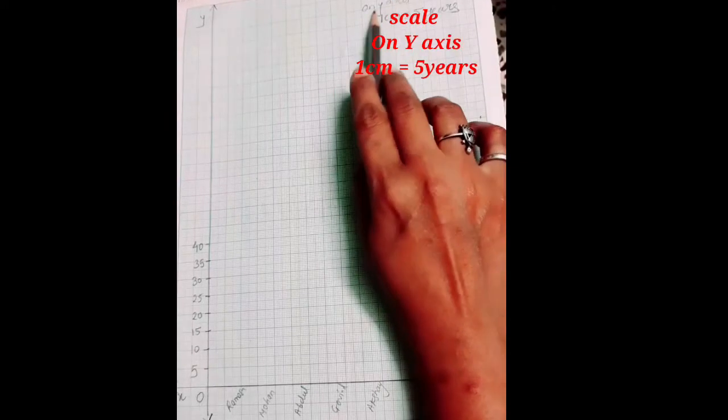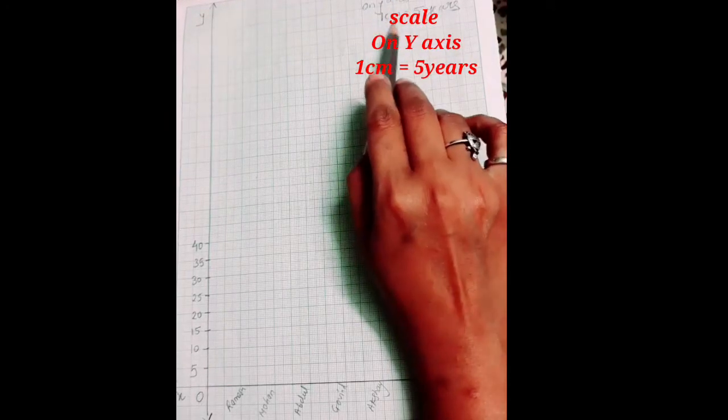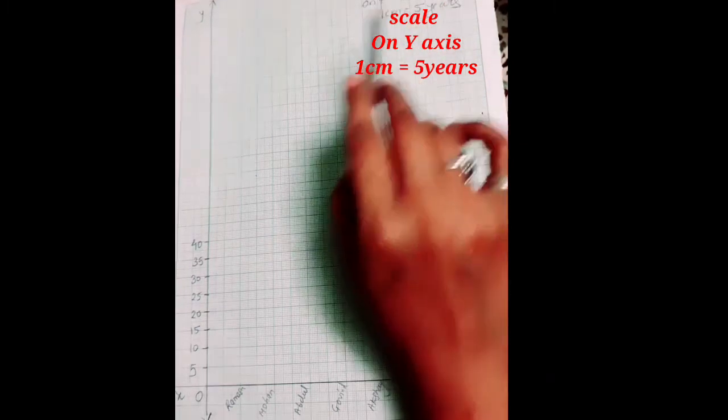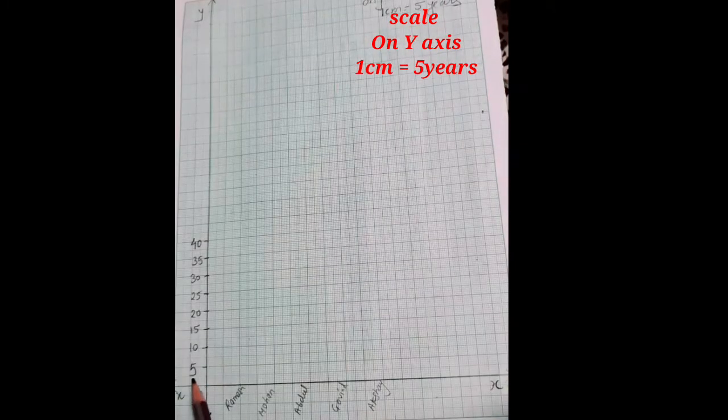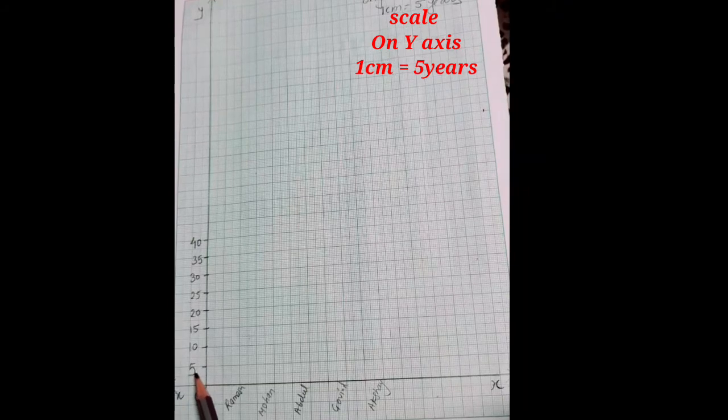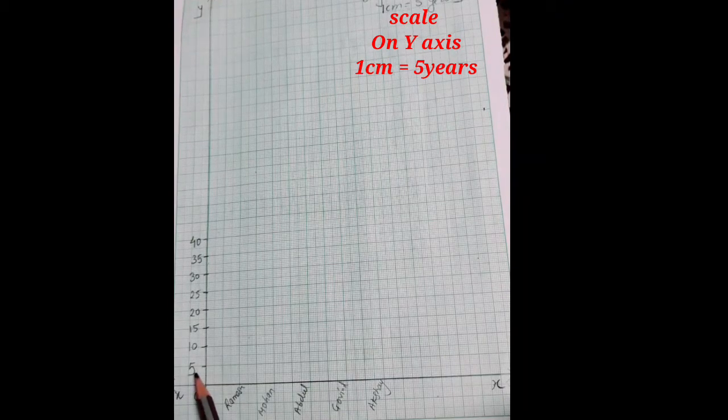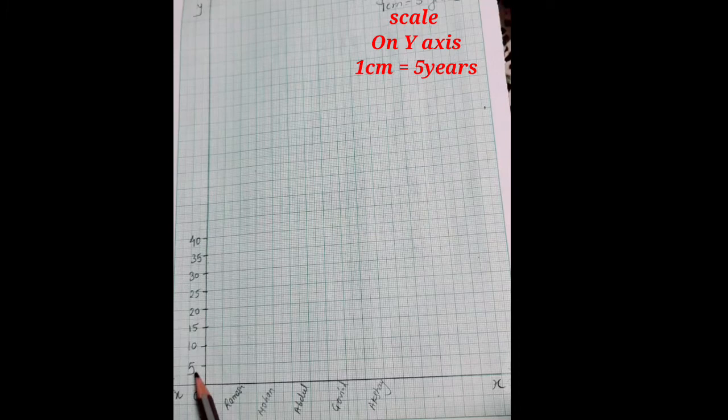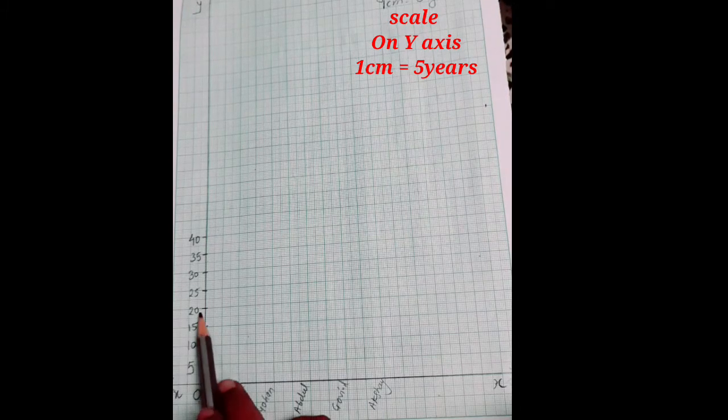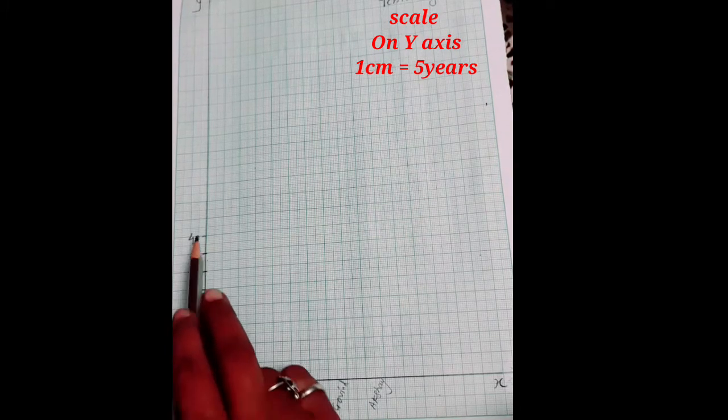And scale is given in the question. Scale on y axis we have to take 1 cm equal to 5 years. So on y axis we will take the scale of 5. It means we have to write the table of 5: 5, 10, 15, 20.